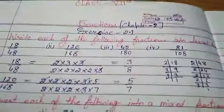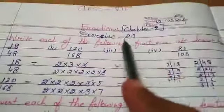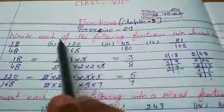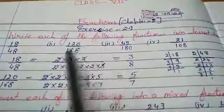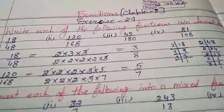Good morning students, welcome to class 7th. Today we will start exercise 2.1 from chapter 2nd. Now write each of the following fractions into lowest terms. There are 4 parts. I will do only 2 parts.